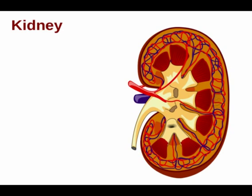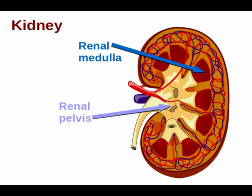Remember, a kidney is a three-dimensional structure. When we look at images like this, we are looking at a stylized drawing through a very thin slice of a kidney. A typical kidney can be seen to have three obvious layers: the renal pelvis that collects the output of the kidney and sends it to the ureter; a medulla, meaning middle, which is divided into rounded pyramid-shaped regions; and an outer cortex.